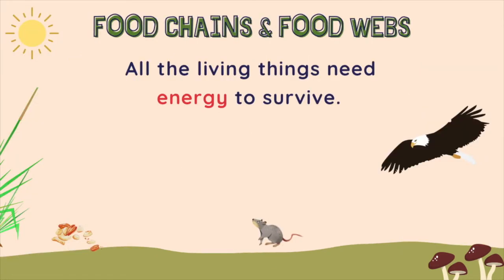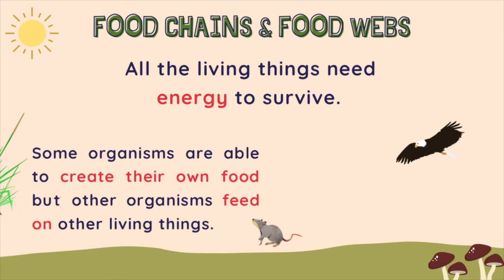All living things need energy to survive. Some organisms are able to create their own food, but other organisms feed on other living things. For example, trees and plants can create their own food with photosynthesis, but foxes and rabbits feed on other living things.